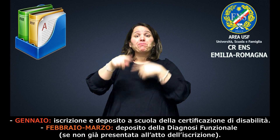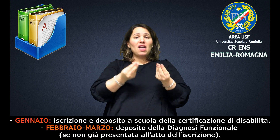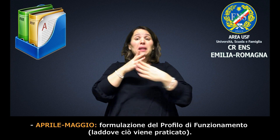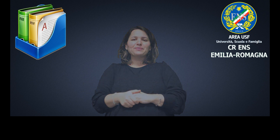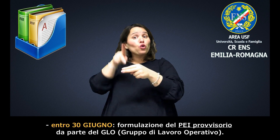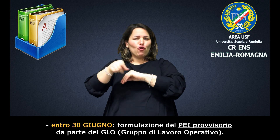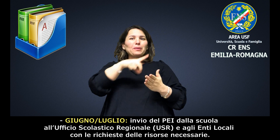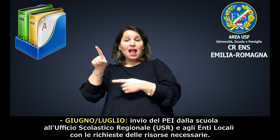Modalità di attuazione delle certificazioni di disabilità. Febbraio-marzo: deposito della diagnosi funzionale se non già presentata all'atto dell'iscrizione. Aprile-maggio: formulazione del profilo di funzionamento, laddove ciò viene praticato. Entro il 30 giugno: formulazione del PEI provvisorio da parte del GLO, gruppo di lavoro operativo. Giugno-luglio: invio del PEI dalla scuola all'ufficio scolastico regionale e agli enti locali, con le richieste delle risorse necessarie.